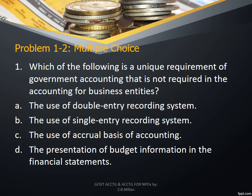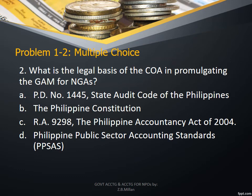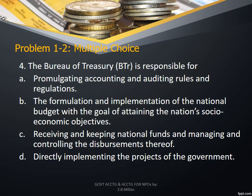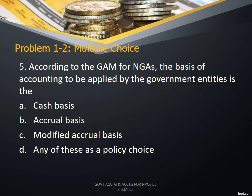Problem 1-2, multiple choice questions. Number 1: Which of the following is a unique requirement of government accounting not required in accounting for business entities? Answer: The presentation of budget information in the financial statement. Number 2: What is the legal basis of the COA in promulgating the GAM for NGAs? Answer: The Philippine Constitution. Number 3: Which of the following is tasked with keeping the general accounts of the government, supporting vouchers, and other documents? Answer: COA. Number 4: The Bureau of Treasury is responsible for receiving and keeping national funds and managing and controlling the disbursement thereof. Number 5: According to the GAM for NGAs, the basis of accounting to be applied by government entities is the accrual basis.